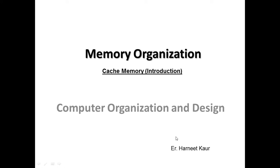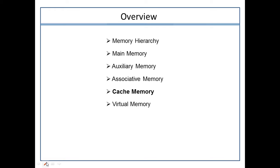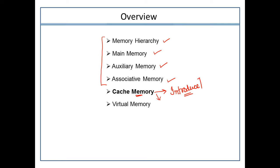Hello friends, in the series of learning computer organization and design, today we are going to learn about cache memory. As usual, let's discuss the overview of today's session. We have already covered topics in memory organization like memory hierarchy, main memory, auxiliary memory, and associative memory. Today's session will focus on cache memory — this is an introduction part, and in the upcoming session we will learn certain mapping techniques.